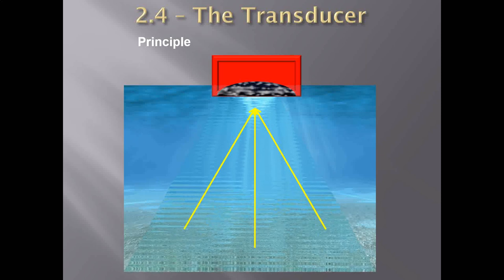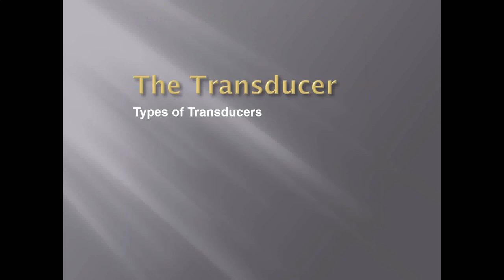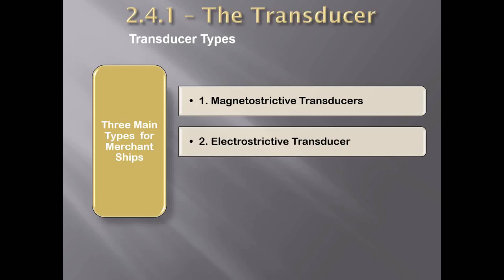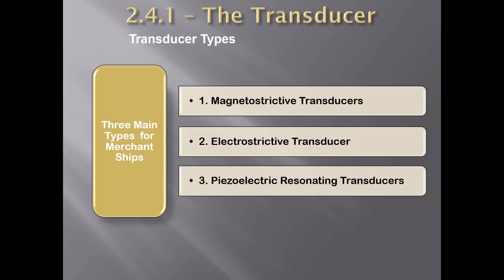It is important to note that for commercial marine echo sounders, sound is sent out in what is called the pulse system, in which rapid short high-intensity pulses are transmitted and received by a single transducer. This allows the system to be in send and receive mode to enable timing calibrations. Three types of transducer constructions are available. The first two have been found to be sufficiently robust and reliable for use on board merchant ships. The first type is the magnetostrictive transducer, the second is the electrostrictive transducer, and the third is the piezoelectric resonating transducer. The first two are used on larger ships, while the third is used for smaller vessels.